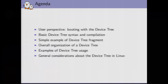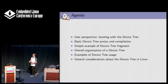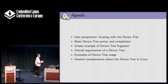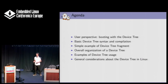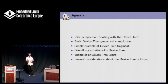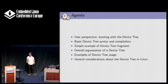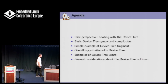Today I first want to start with the user perspective - not the kernel developer, but the user - and what the device tree is changing in terms of how you boot the kernel. Then I'll go through the basic device tree syntax, see a simple example of a device tree, then the overall organization. After looking at a very simple fragment, we'll look at the overall organization of the different nodes and sub-nodes. Then we'll go through different examples and talk about different bindings - clocks, pin control, interrupts, and things like that - and end up with some general considerations about device tree binding design.